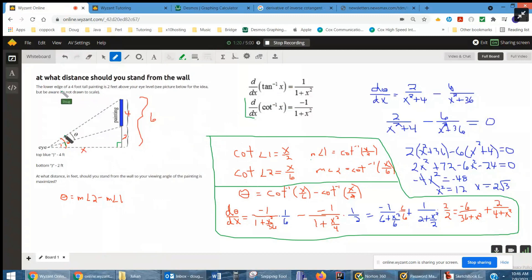And similarly, the cotangent of angle 2, the big angle, is x over this entire distance, which is 6. So the measure of angle 2 is equal to the inverse cotangent of x over 6. And now we've got a formula for theta in terms of x.